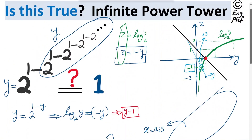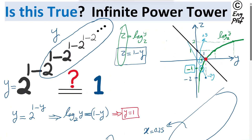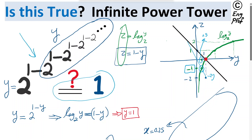I hope this example is helpful in terms of proving in multiple ways that this infinite power tower is in fact equal to 1, and also presenting the discussion of convergence as well.